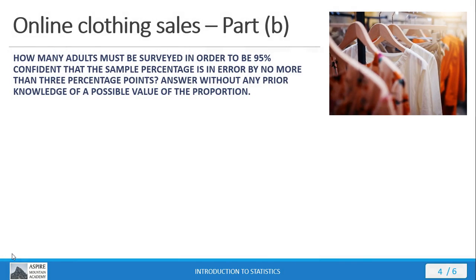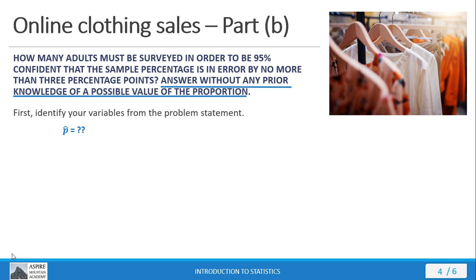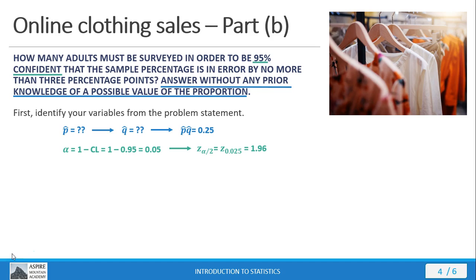The second part of this problem asked us to answer without any prior knowledge of a possible value of the proportion. In that case, we're going to go through the same steps as before, but we're going to assume that the product of P-hat times Q-hat is 25%. We have the same confidence level, which gives us the same significance level alpha of 5%, leading to our critical value Z-score of 1.96. Again, our margin of error is 3 percentage points.